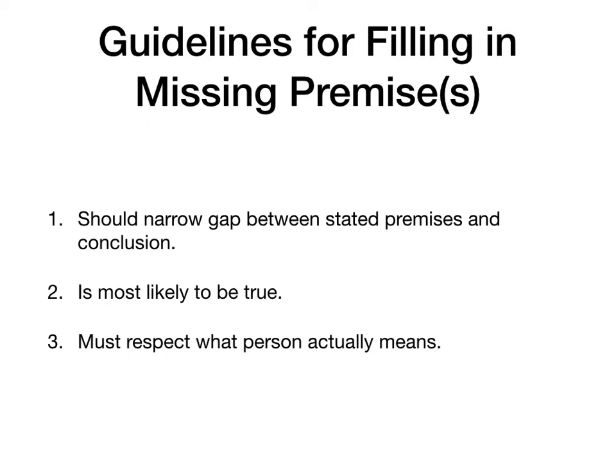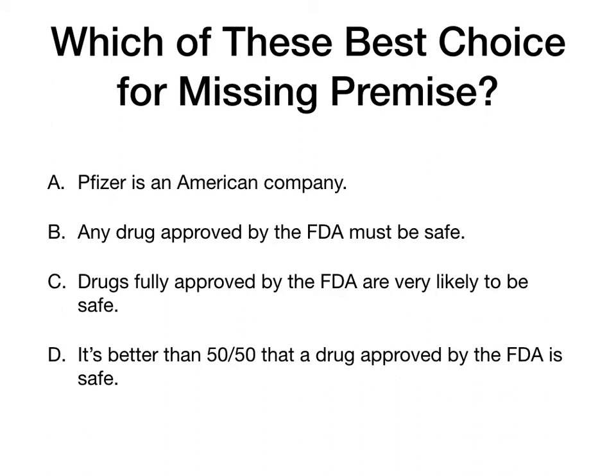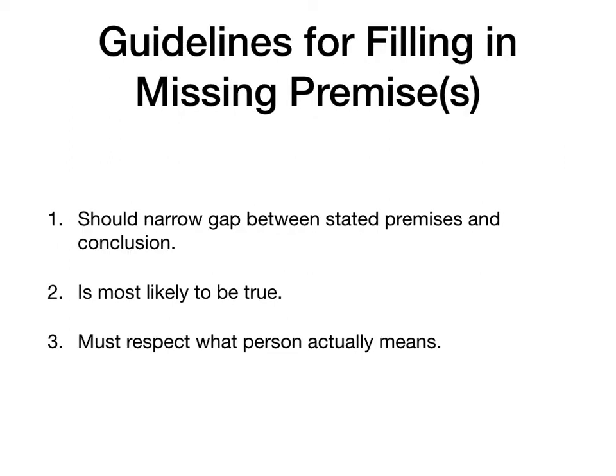Before going back to what is the best answer here, let's think a bit about some guidelines for filling in missing premises. I think this will help. There are three guidelines. Lavin doesn't really talk about this — I tend to think he's at least as good as the Kelly book I originally assigned. But Kelly talks a bit more about this, and I think he gives some good guidelines for the missing premises. There are three that will be helpful.